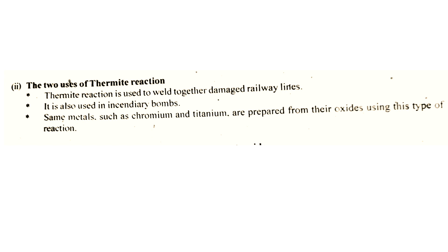Question 7F: Two uses of the thermite reaction. The thermite reaction is used to weld together damaged railway lines. It is also used in incendiary bombs.